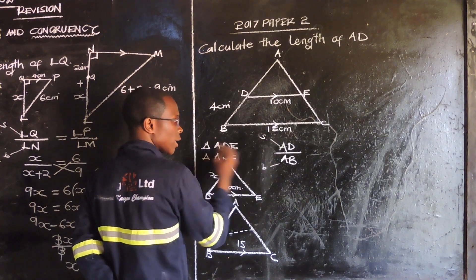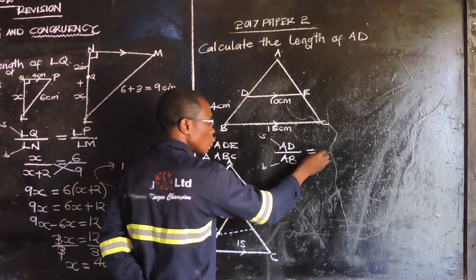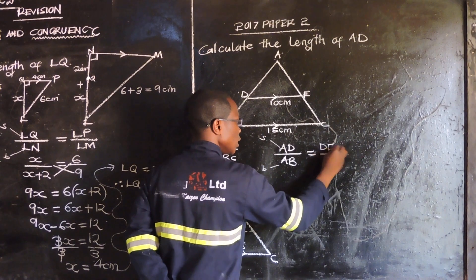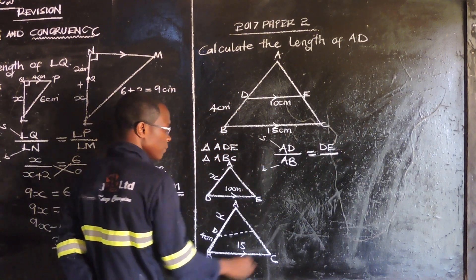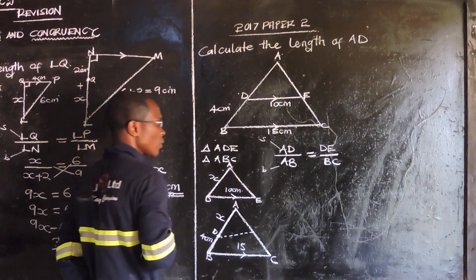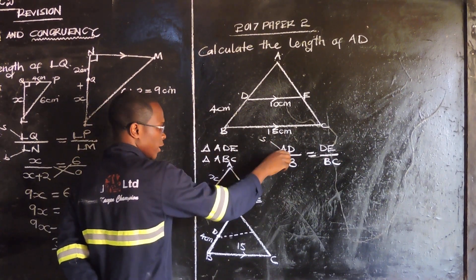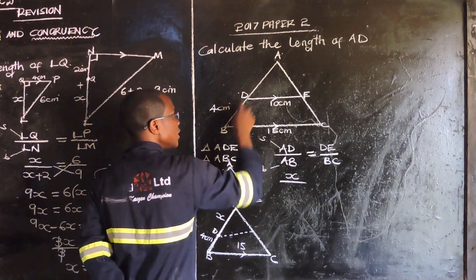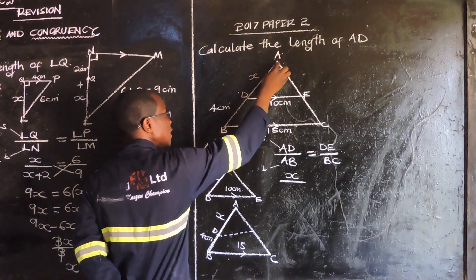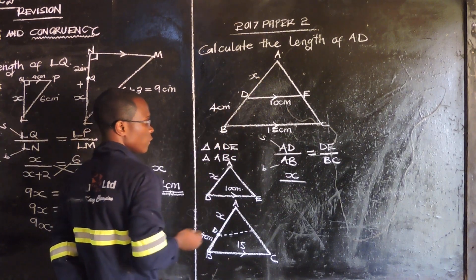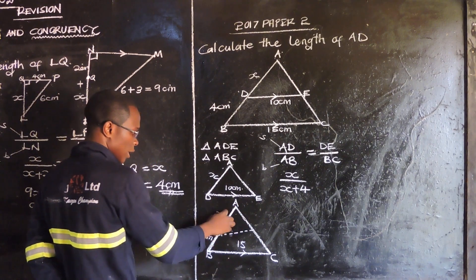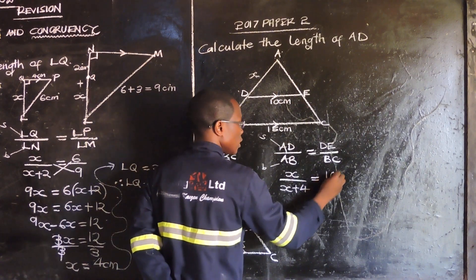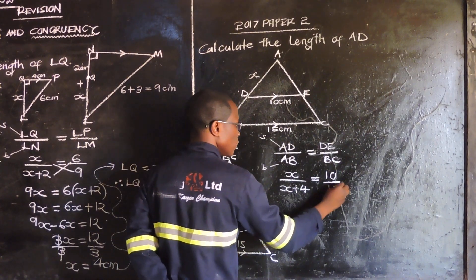The small side should be on top. DE corresponds to BC. So we set up the proportion: AD over AB equals DE over BC. AD is x, and AB is x plus 4 (since BD = 4). So the equation is: x over (x + 4) equals 10 over 15.